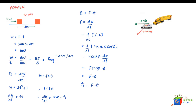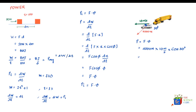The power delivered by the trailer — the force of 4000 newtons — is given by P = F · v. The force is 4000 newtons, the velocity of the object is 10 meters per second, and the angle between these two vectors is 30 degrees. Multiplying with cos 30 degrees gives 34,400 watts, or 34,400 joules per second of work done, which is also written as 34.4 kilowatts.